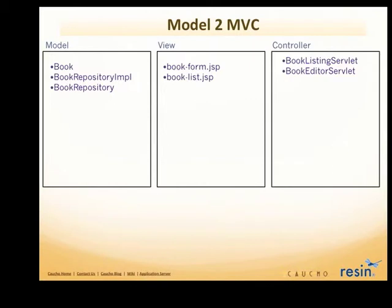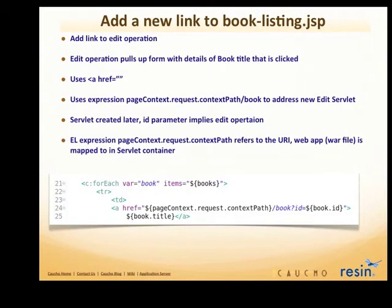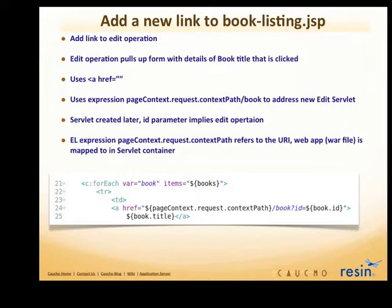First let's turn our attention to the book listing. We're going to add a link to do an edit operation. When the user clicks on the title, it's going to load the book into request scope so that the JSP page can render the individual elements of the HTML form. We use the expression pageContext.request.contextPath slash book in the URL so that we can address the web application wherever that happens to be mapped, rather than hard-coding the name.